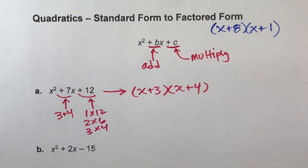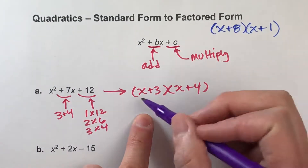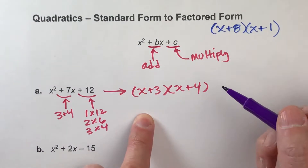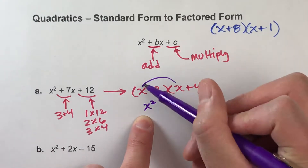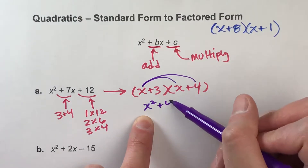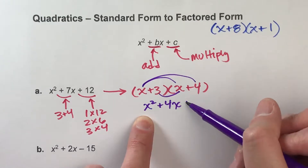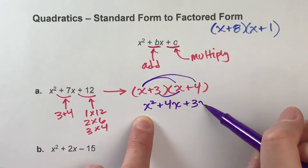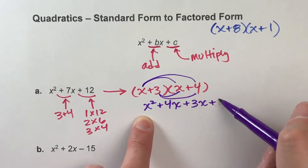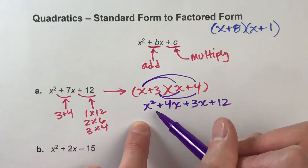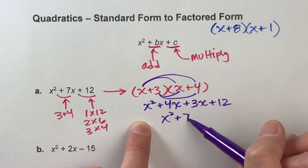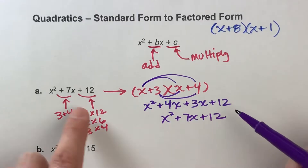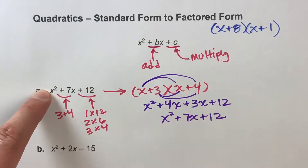If you want to double check, it's super easy — just multiply it out. x times x is x squared, x times 4 is 4x, 3 times x is 3x, 3 times 4 is 12. Combining like terms gives x squared plus 7x plus 12, which is exactly what we started with.